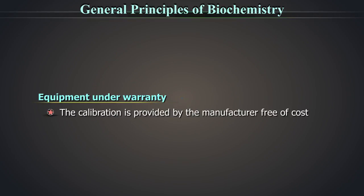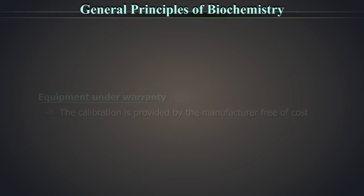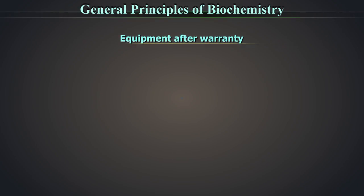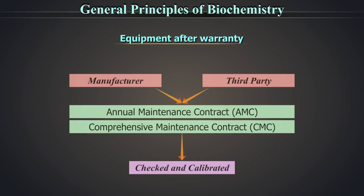Equipment under warranty: The calibration is provided by the manufacturer free of cost. Equipment after warranty: Annual maintenance contract or a comprehensive maintenance contract with the manufacturer or third party will make it easier to get your equipment checked and calibrated.